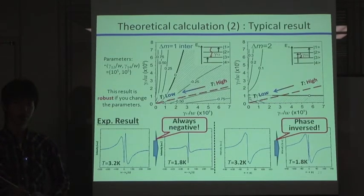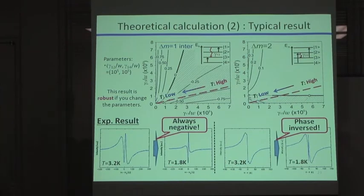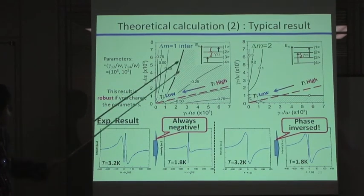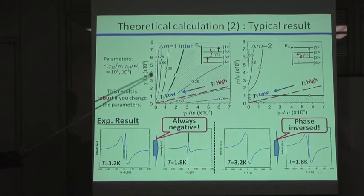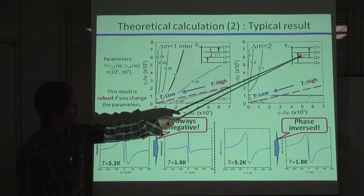This is a typical result. In this figure, the horizontal axis is a normalized relaxation parameter gamma 1,3 here. And the vertical axis indicates a normalized relaxation parameter gamma 2,3 here.